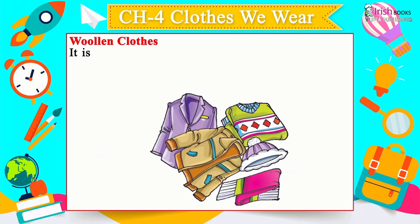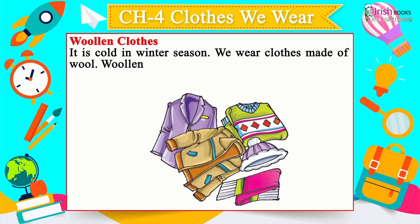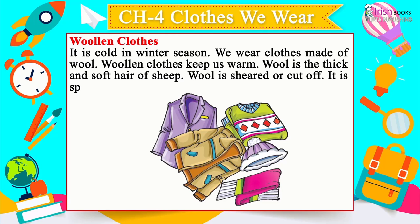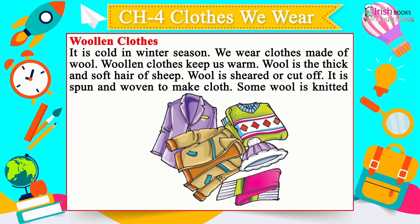Woollen Clothes: It is cold in winter, so we wear clothes made of wool — woollen clothes keep us warm. Wool is the thick, soft hair of sheep. It is sheared or cut off, then spun and woven to make cloth. Some wool is knitted into sweaters.